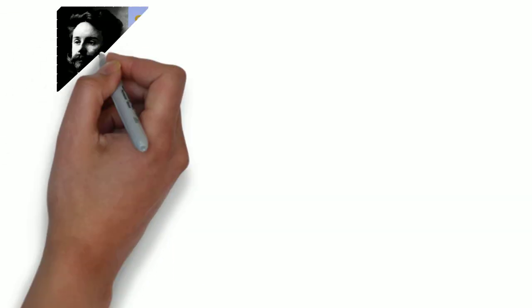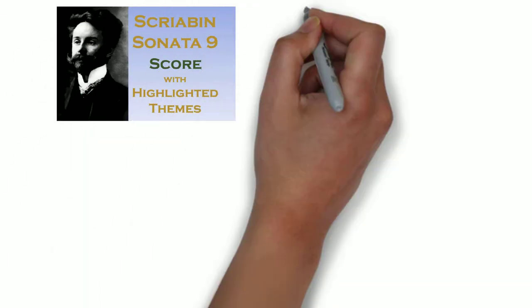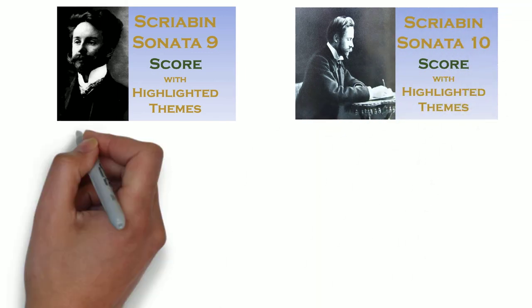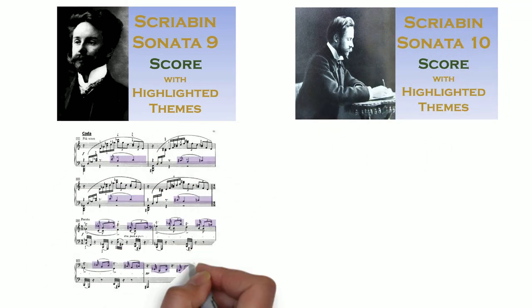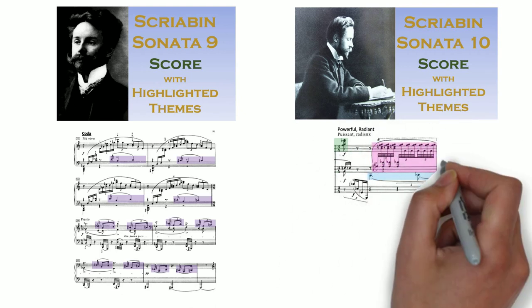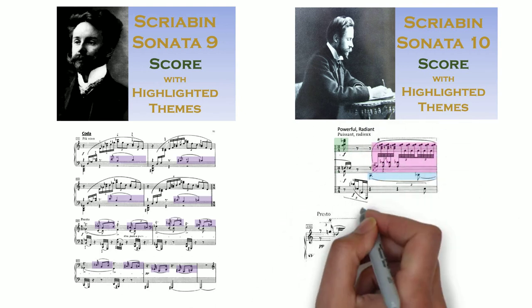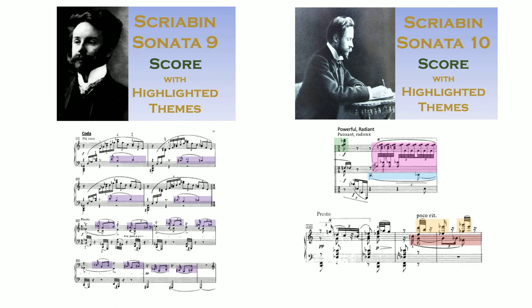Sonatas 9 and 10 go back to only having one climax. Sonata 9 culminates in a terrifying climax in the coda, and Sonata 10 brings Theme 2 to a climax in the development section, using the dance motif in the coda.